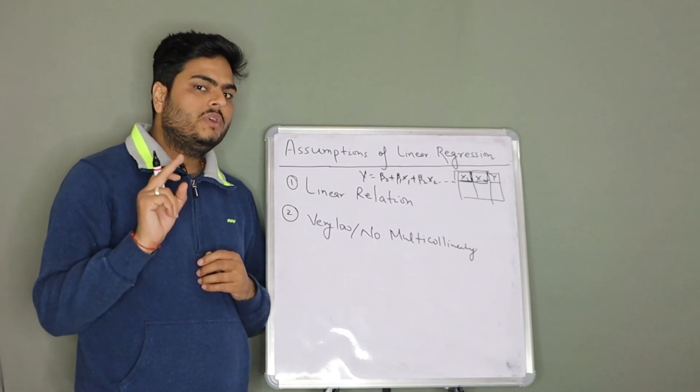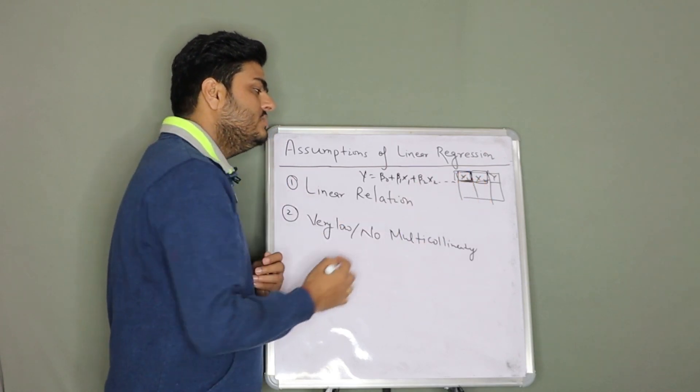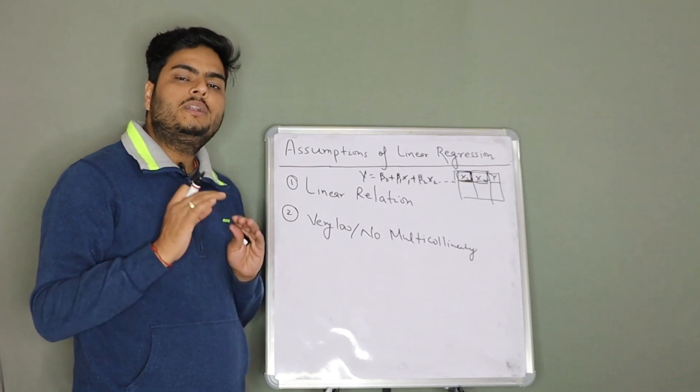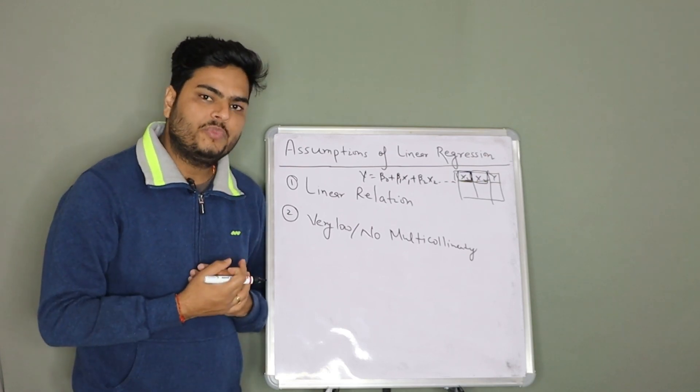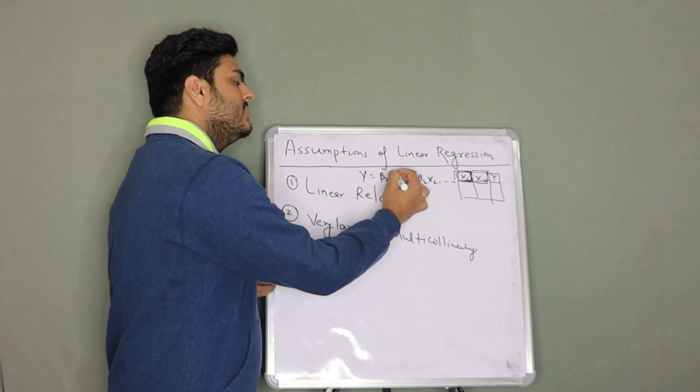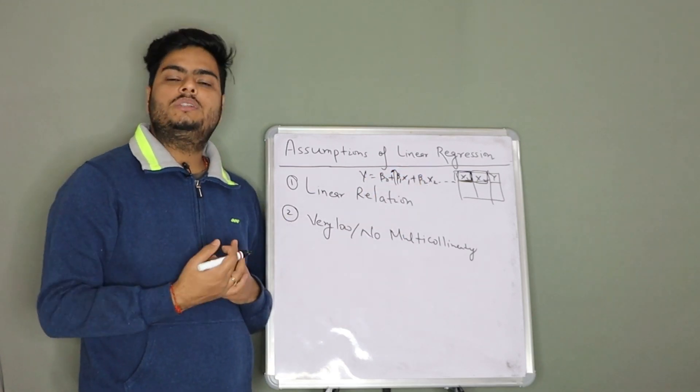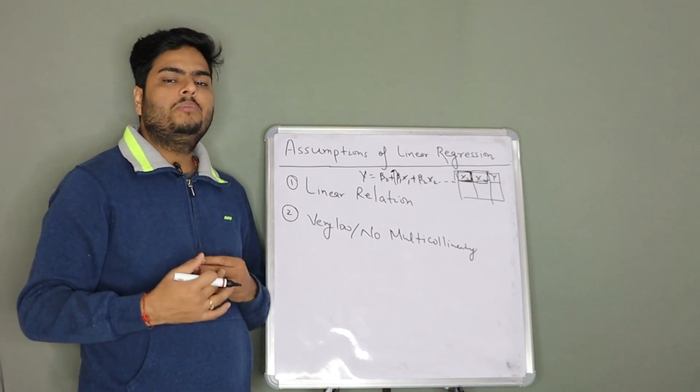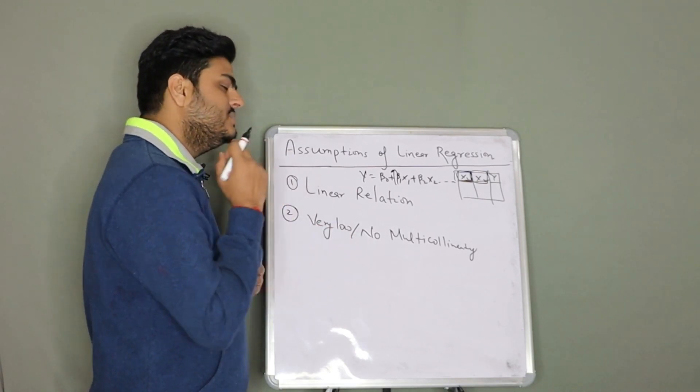So essentially when your variables are correlated, then when you change one variable, the other variable cannot be kept constant, which means internally it will also change to a degree. And that is where your coefficients will get inflated. Due to this reason, multicollinearity should not be there in the data or it should be very minimal.